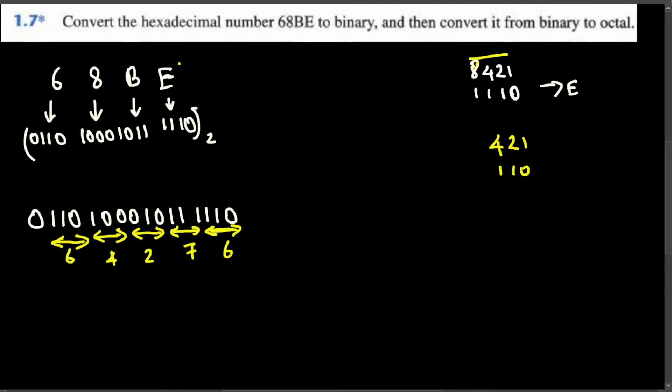Okay, 64276, this is the octal number. So the conversion of this 68BE base 16, that's the given one, and if we convert this one to a binary number we got 0110100010111110. It's the binary representation of this hexadecimal number. And the octal representation of this hexadecimal number is 64276, and the base is 8. And that's how we do these kind of problems.